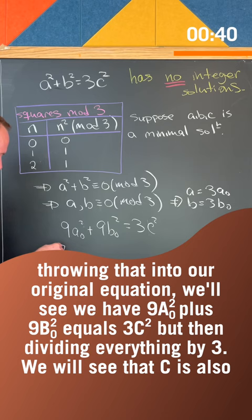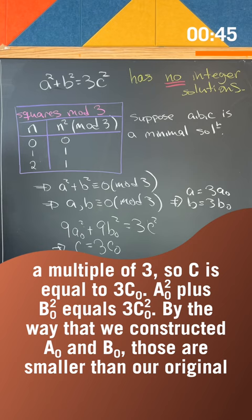But then dividing everything by 3, we will see that c is also a multiple of 3. So c is equal to 3c naught.